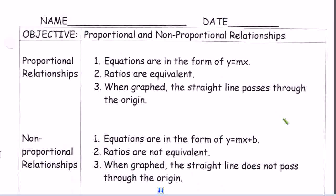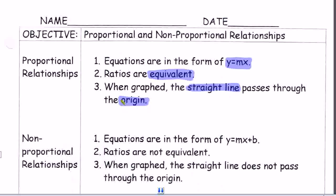In this video we're going to talk about proportional and non-proportional relationships. In order for the relationship to be proportional, equations need to be in the form of y equals mx. Also, ratios need to be equivalent. And the last thing, when graphed, it has to be a straight line and it has to pass through the origin. Those are the main three things that you need to keep in mind.